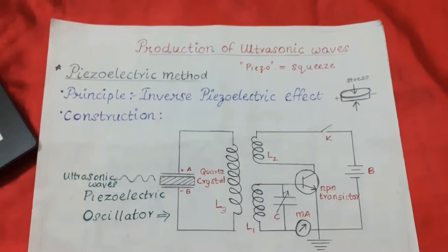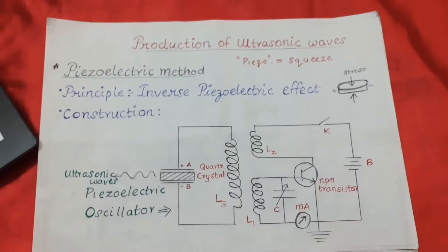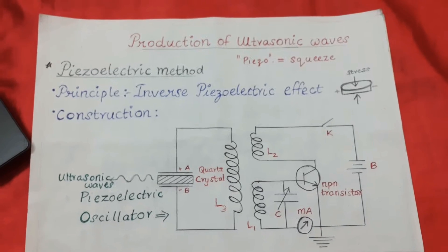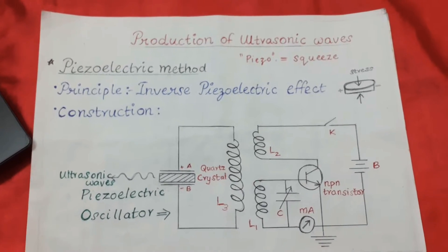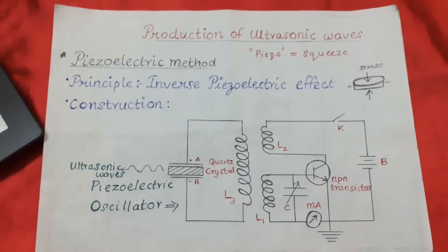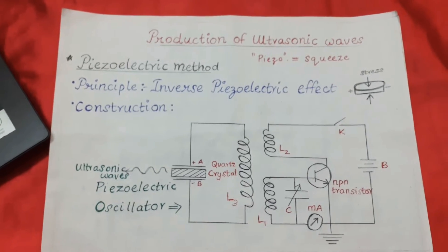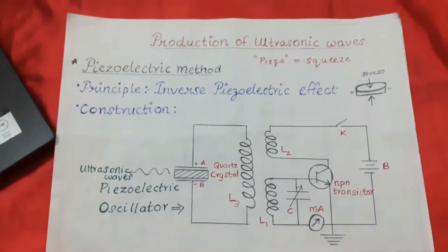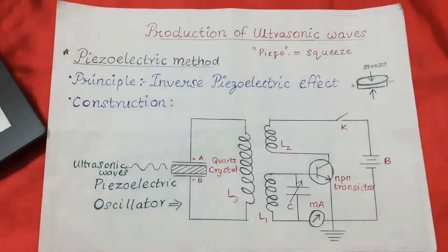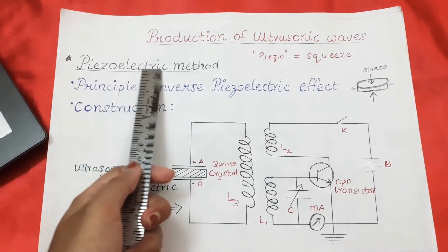In this video we are going to discuss the second method used to produce ultrasonic waves. In the last one we saw how ferromagnetic materials are used to produce ultrasonic waves. In this method we are going to make use of piezoelectric crystals, so the method is called the piezoelectric method.